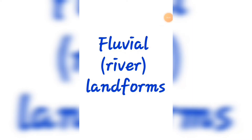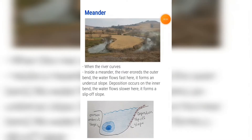Today we'll be looking at fluvial landforms. The first landform is a meander, which is when the river curves as it goes along its course. Inside a meander, the river erodes the outer bend where the river flows faster, forming the undercut slope.